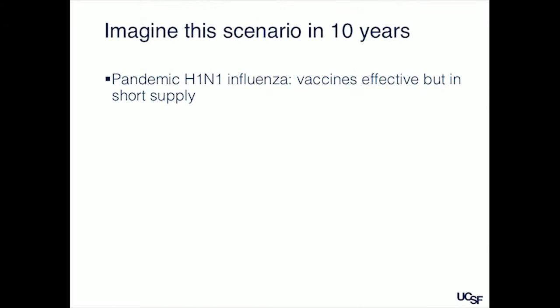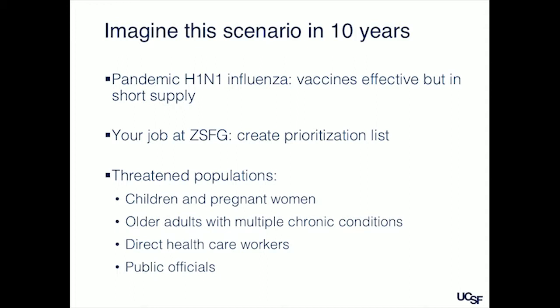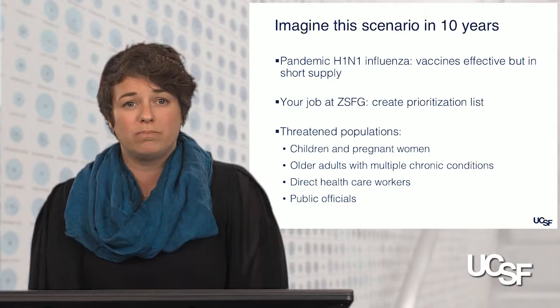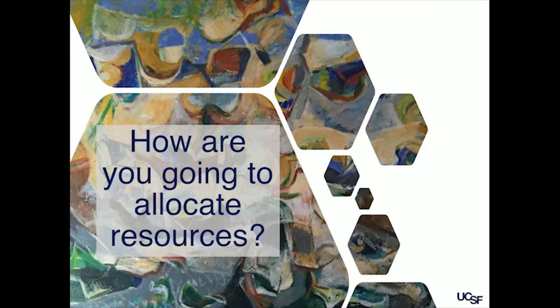Say it's ten years from now and you are working at a public health hospital. There's pandemic influenza. Vaccines are available, but it's early in the season and supply isn't great yet. As a medical director, you have to create a prioritization list of who will get these vaccines first. The threatened populations are the usual vulnerable people — children, pregnant women, older adults with multiple chronic conditions — but also healthcare workers and public officials who have roles like keeping the trash from piling up or keeping us from starting a nuclear war. What are you going to do? How are you going to decide who gets vaccines first?